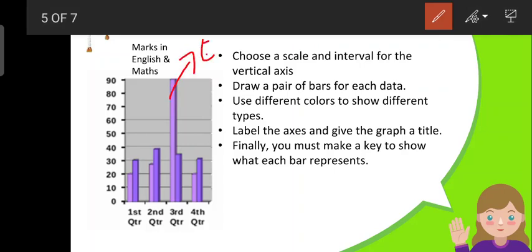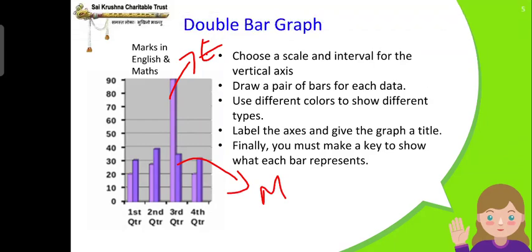Light purple and the dark purple represents Maths. Choose a scale and interval for the vertical axis. Draw a pair of bars for each data. Use different colors to show different types. Here we have used light purple and dark purple to show English and Maths respectively. Label the axis and give the graph a title. Finally, you must make a key to show what each bar represents.